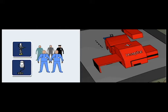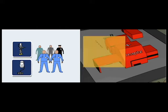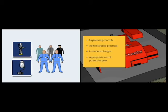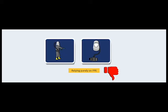This is best accomplished through a combination of engineering controls and administrative practices, procedure changes, and the appropriate use of protective gear. Relying purely on the use of PPE is the least desirable option because of the dependence on the individual to select and consistently use the equipment correctly.